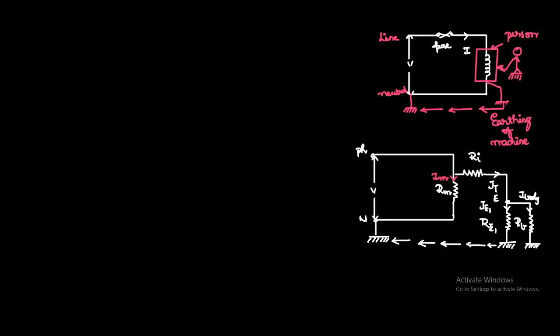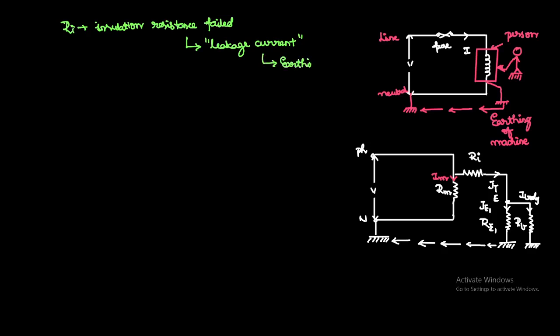Now let us consider the case where earthing is provided. If the insulation resistance fails, a leakage current starts flowing — the current that causes electric shock is called leakage current. That leakage current flows through the body of the person touching the machine. To avoid this leakage current, we provide the earthing system.